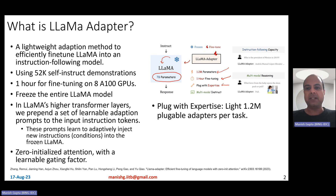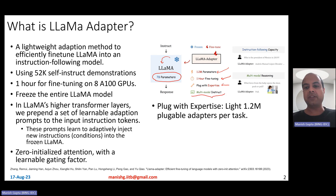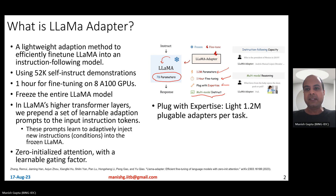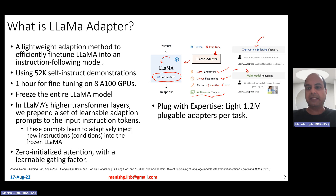If you're fine-tuning for a particular task, use certain adapters; for another task, you could use other 1.2 million adapters. It also extends to multimodal fine-tuning — multimodal instruct-based fine-tuning. Here are examples of instruction-following capacity and an example of multimodal reasoning.